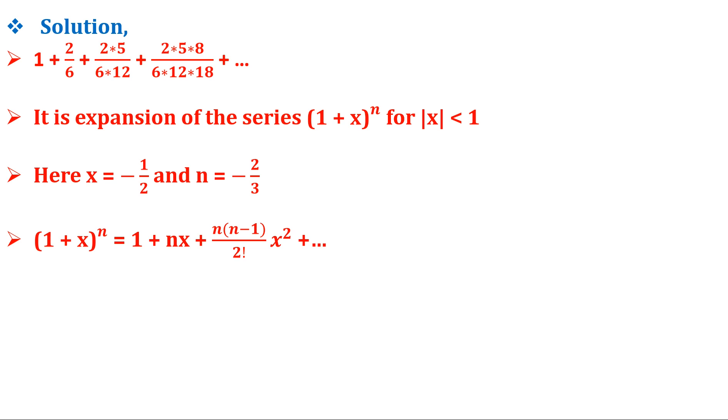And we know the binomial expansion of (1 + x) raised to n is equals to 1 plus nx plus n into (n minus 1) by 2 factorial into x square and so on. Substituting the value of x and n in the given series we get